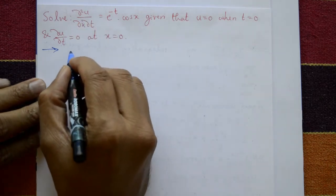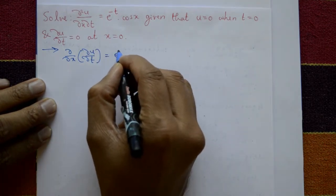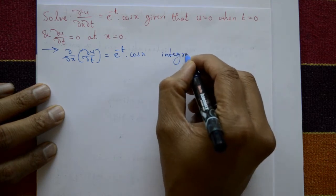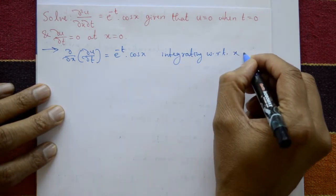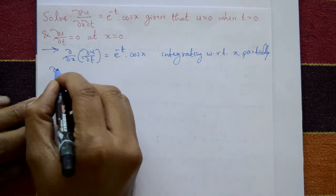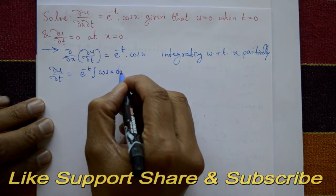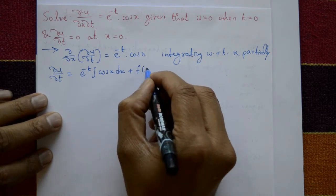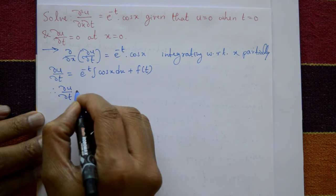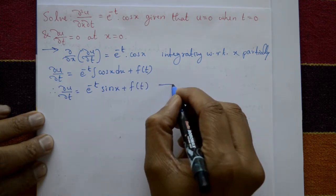The given PDE can be written as ∂/∂x(∂u/∂t) = e^(-t)·cos(x). Integrating with respect to x partially, treating t as a constant: ∂u/∂t = e^(-t)·sin(x) + f(t). This is equation number 1.